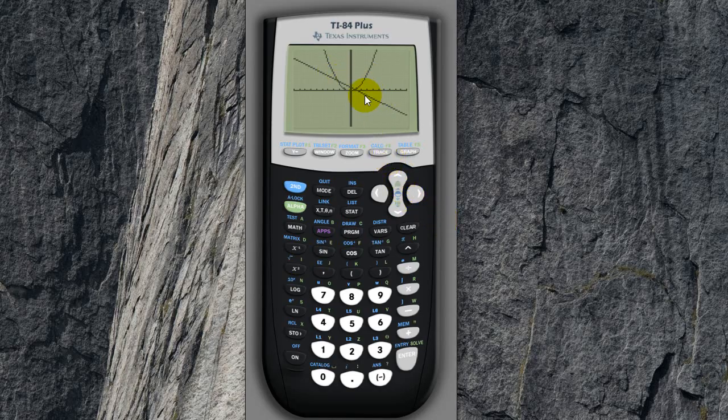Okay, yep, it does make it easier. So let's now press trace. Oh, sorry, not trace. Second trace, which gets us the calc function. And let's go to intersect again. And now it wants us to select the first curve. So let's make the straight line the first curve. And the parabola the second curve.